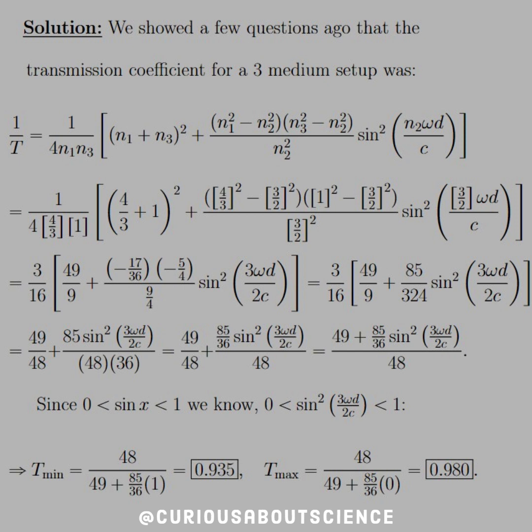So what we're trying to say here now is that since sine oscillates between 0 to 1, we know that the sine squared argument here oscillates between 0 to 1. So when we take the inverse, we know that T minimum happens when sine squared is 1 because we have a larger denominator.